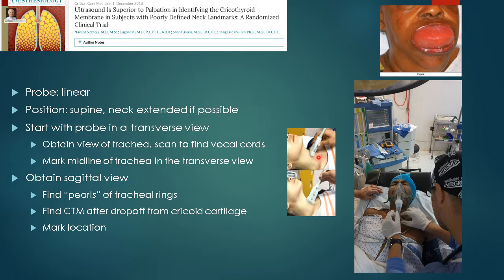What you want to look for is a view of the trachea, and you want to put the trachea right underneath the middle of your probe. Scan up to find the vocal cords, then scan back down and put a mark right at the midline of your probe when the trachea is underneath it. This tells you where in the neck the trachea is positioned — especially important if the trachea is off-center due to a hematoma, abscess, or mass pressing it to the side.